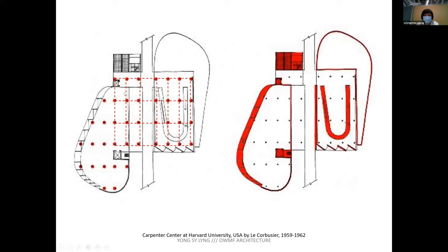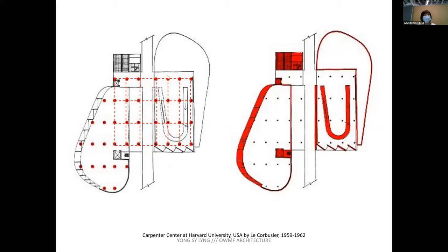Looking at the Carpenter Center by Le Corbusier: you have pilotis. In one direction this is a four-square grid with a column in the middle, but in the other direction it's a nine-square grid. Because you have a column in the middle here, you enter from the side, creating asymmetry. You also notice the column grid is not exactly square, which means the idea of the grid is very flexible — it's just a diagram, not determining absolute dimensions. His Cartesian grid extends everywhere and the facade simply sets the boundary limit.